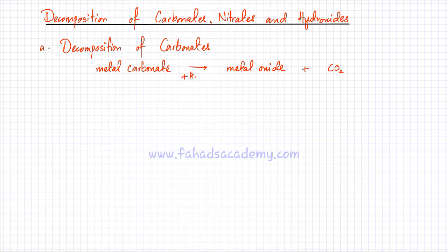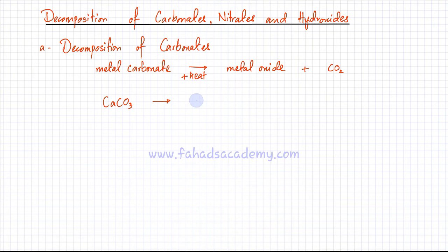Some metal carbonates easily decompose while other metal carbonates need stronger heating. For example, if you heat calcium carbonate — which is limestone or chalk — it decomposes and produces calcium oxide and releases carbon dioxide gas.